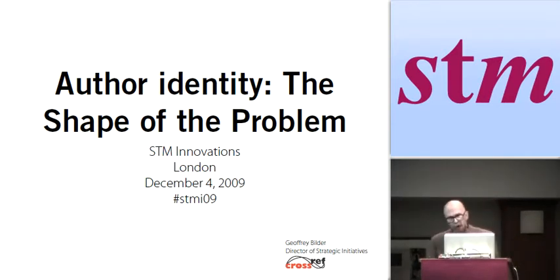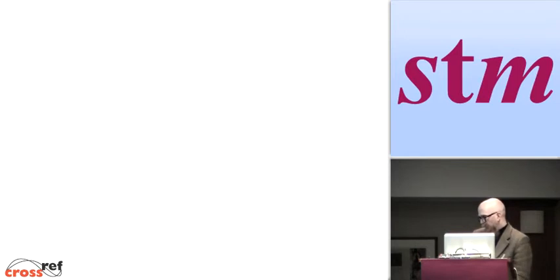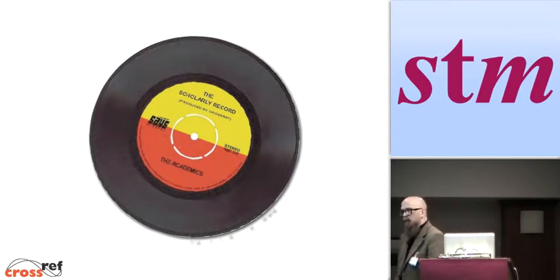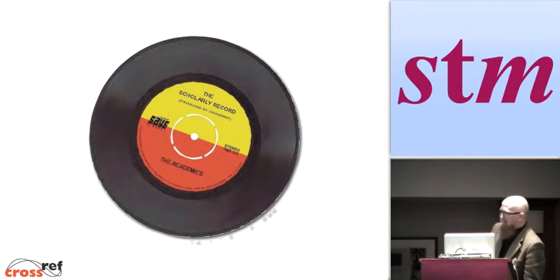With that in mind, let's start with the big question: why do we care about author ID? The answer is pretty simple. It has to do with this thing that we are all concerned about, the scholarly record. Now, the fact that you're giggling at this says something about your age. I've given this presentation at Science Online to young science bloggers, and they looked at this and scratched their heads. It's like, what's that?